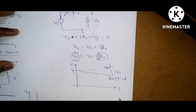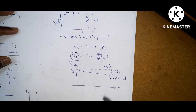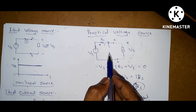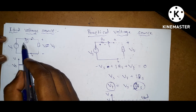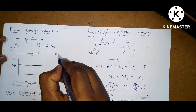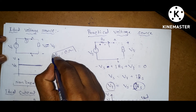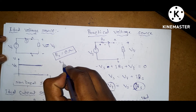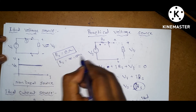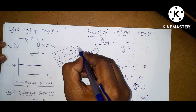For the ideal voltage source, the terminal voltage is constant. Comparing ideal and practical voltage sources, the internal resistance of the ideal voltage source is zero ohms — that is, a short circuit. If R equals infinity, it is an open circuit. The internal source resistance of an ideal voltage source is zero ohms, which is a short circuit.